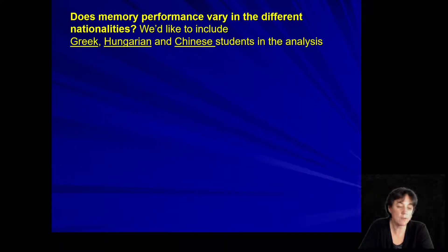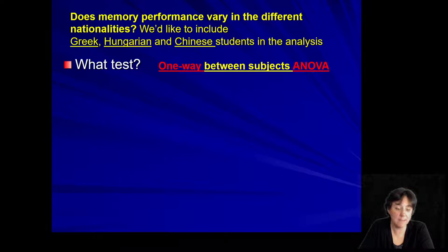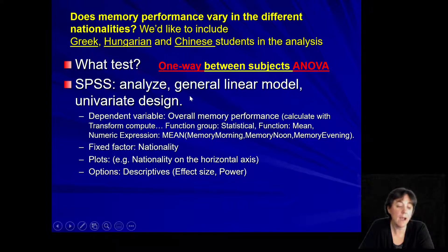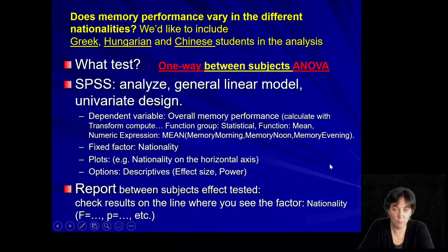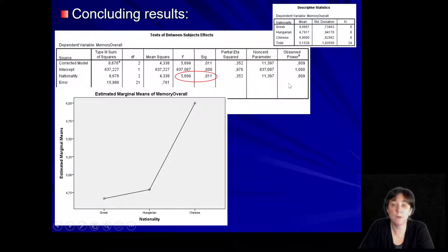Let's see another question: how about nationality? One-way ANOVA testing the effect of nationality is a between-subjects design test because we have groups. Here, contrary to our previous solution, we do have a significant effect of nationality. This is the row you will be looking for always — where you have the grouping variable you're testing.